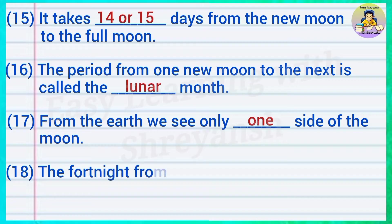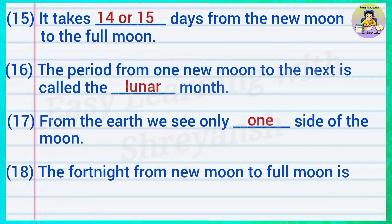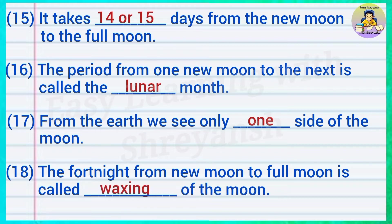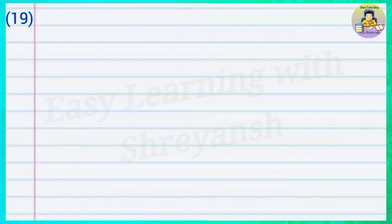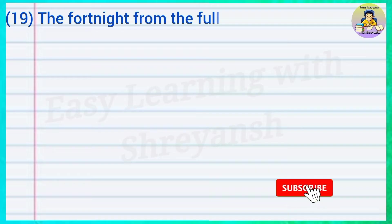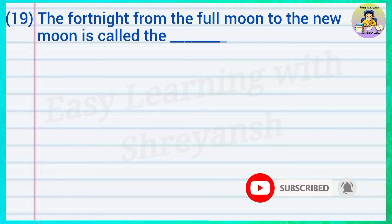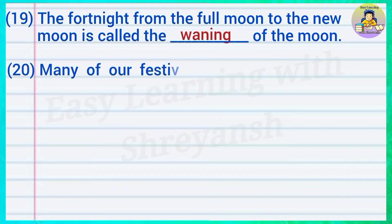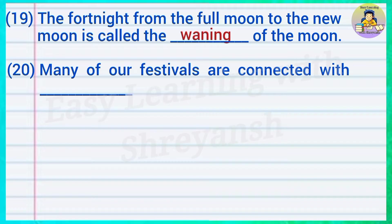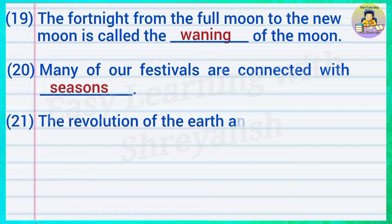Eighteen — the fortnight from new moon to full moon is called the — of the moon — answer: waxing. Nineteen — the fortnight from the full moon to the new moon is called the — of the moon — answer: waning. Twenty — many of our festivals are connected with — answer: seasons.